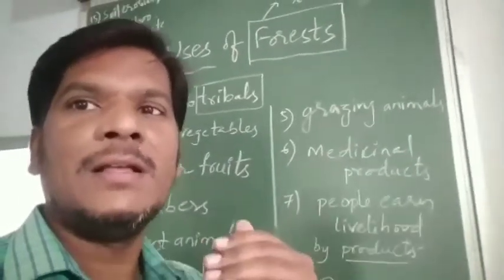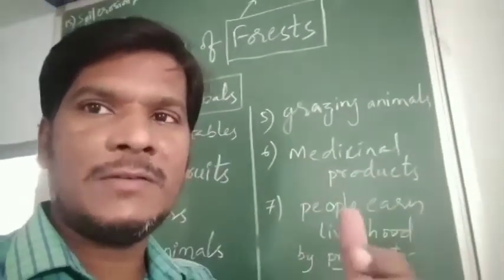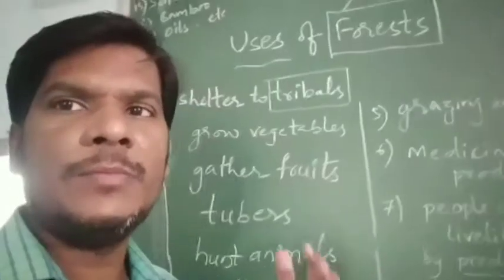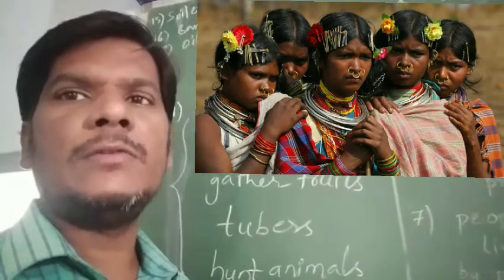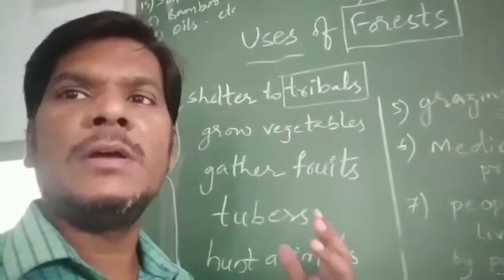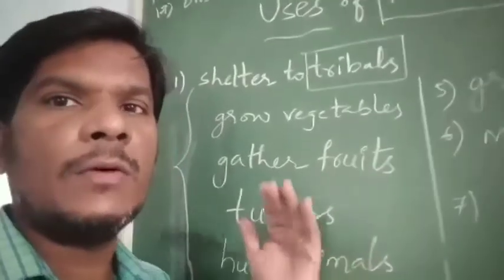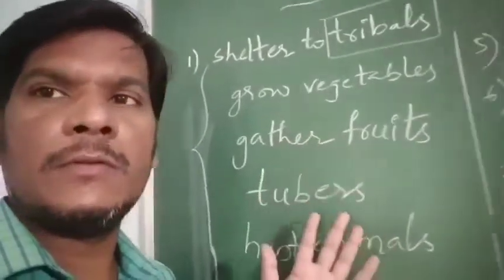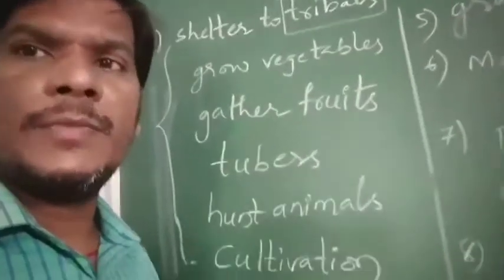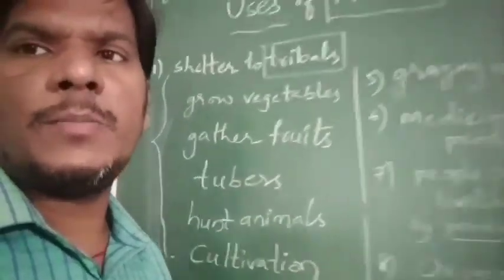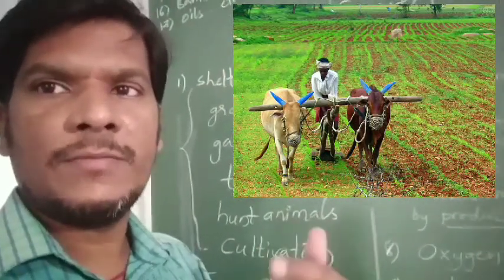Biodiversity means plants, living things, birds, and animals have to live together. Forests are useful in many ways, particularly for tribals. Tribals use forests for their shelters and they grow vegetables there. They also gather fruits and tubers from the forest. Animals are there too. Podu or jhum cultivation is done by the tribals in forest areas.